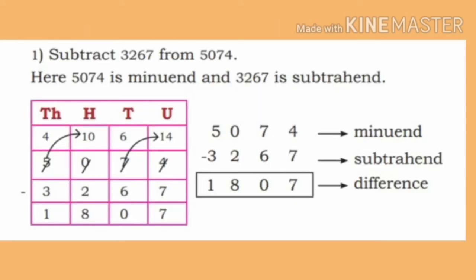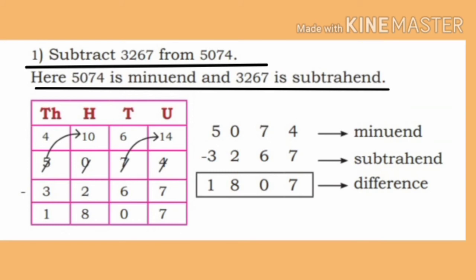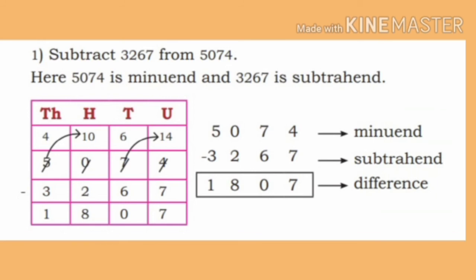Observe the third example, children. Subtract 3,267 from 5,074. Here, 5,074 is the minuend and 3,267 is the subtrahend. Let us find the difference. In the minuend, we have 4 in the units place. It is not possible to subtract 7 from 4. So, borrow 1 ten from the tens place and add 10 plus 4 is 14 units. On subtracting 7 from 14, we get 7. Write 7 in the units place. Now in the minuend, 6 remains in the tens place.